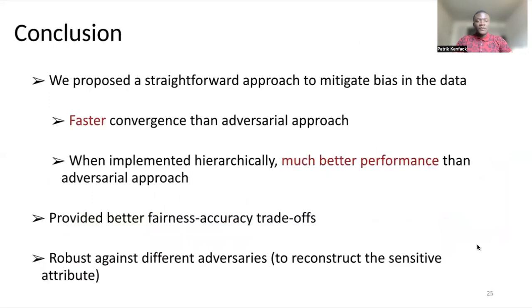Now, I will conclude. In this work, we have presented a straightforward approach to learn fair representation. We use the idea of increasing the uncertainty of predicting the sensitive attribute from the latent space by leveraging noisy label space. Our method provides fast convergence than adversarial approach, in the sense that it's more stable as we just have a minimization problem with a proper loss than a minimax optimization program. And then, we also saw that when we implement hierarchical regularization, it provides much better performances. Overall, we have better fairness accuracy tradeoff, and we have tested our method against different adversaries. And then, we see that this method is still robust against adversaries that we use to test it.